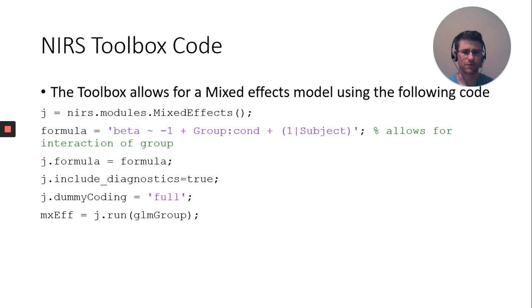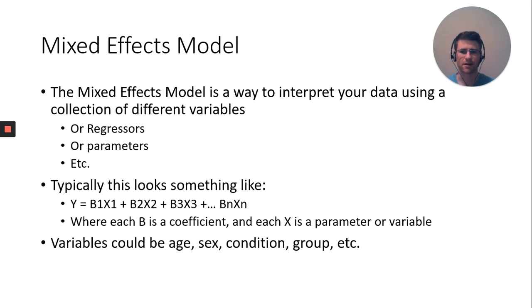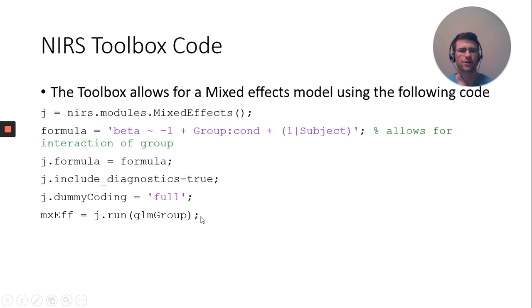Wilkinson notation is a little weird when you first see it. What we had where y equals b one x one plus b two x two plus b three x three, you're going to replace that, and y now becomes beta. You're solving for beta. This squiggly tilde is your equal sign. The negative one denotes whether to include beta naught or a y intercept. Then we have group colon condition plus this with subject in parentheses.